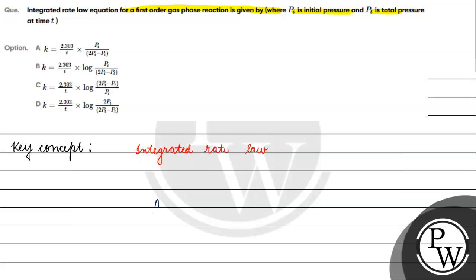Suppose we have A gas going to B gas plus C gas. At t equals zero, only A gas is present with initial pressure pi. At t equals t, suppose x moles are consumed, x moles of B are formed, and b times x moles of C are formed according to stoichiometry.